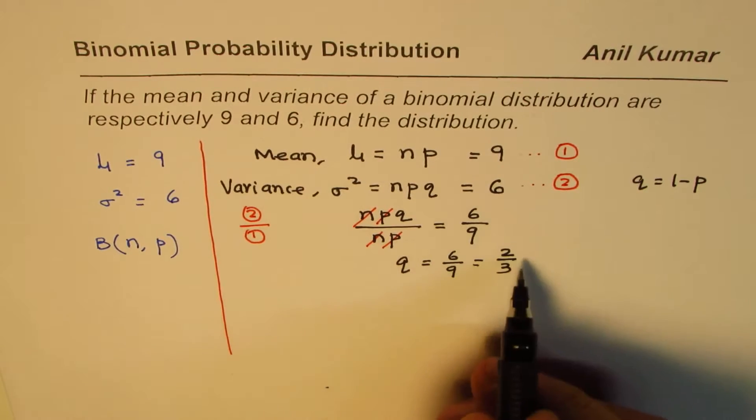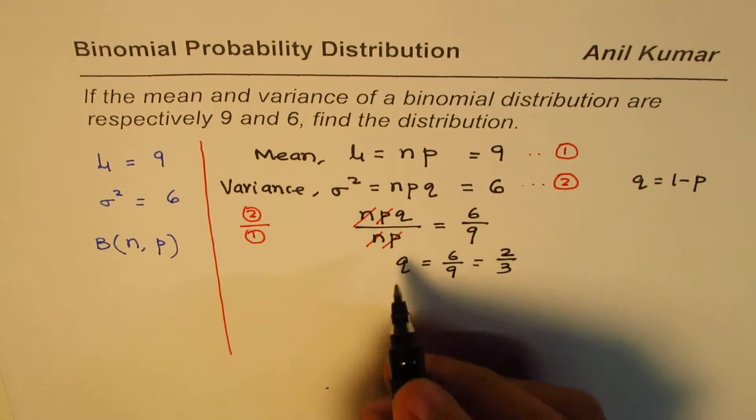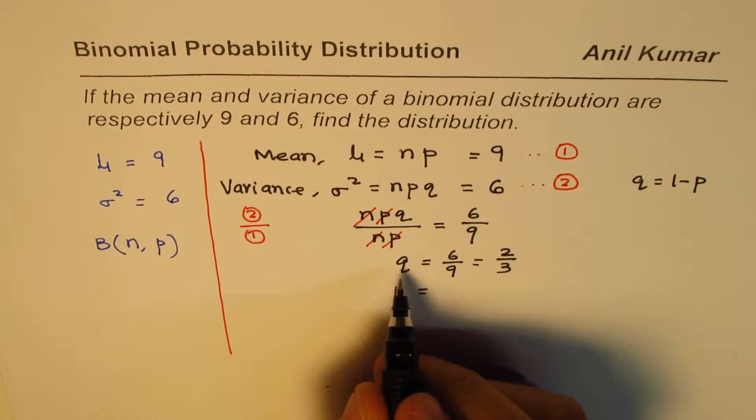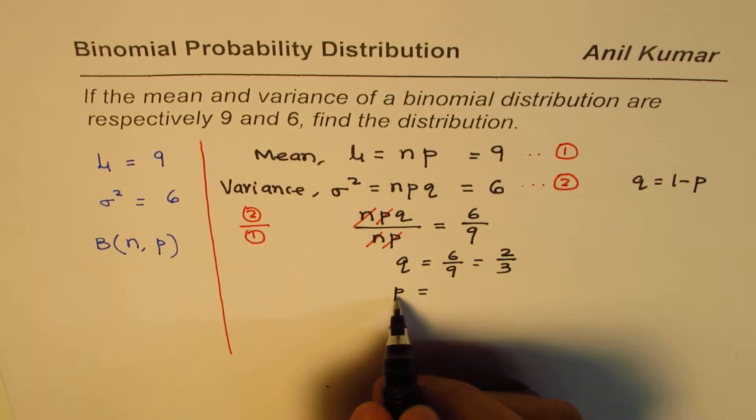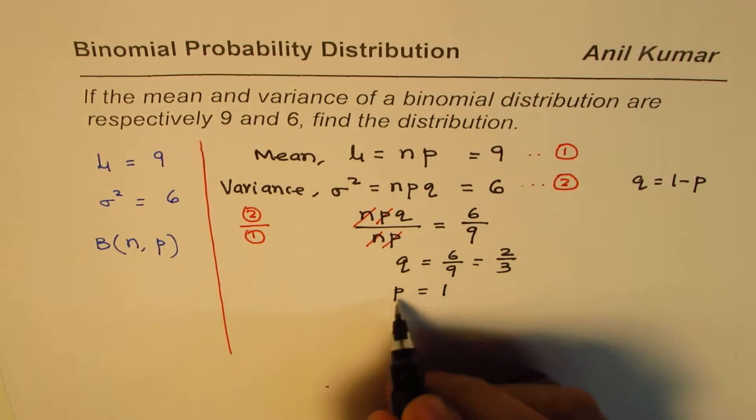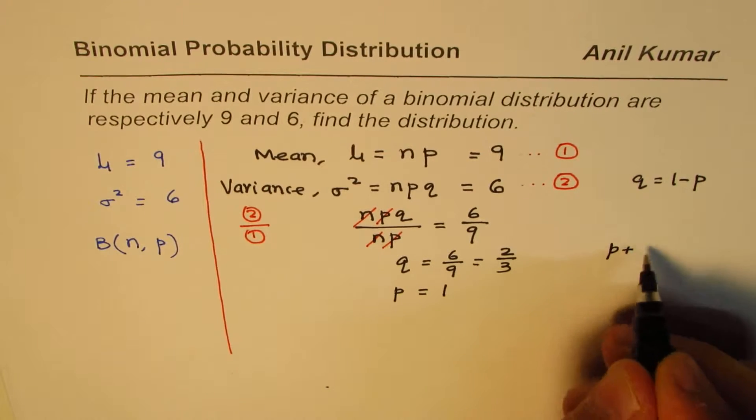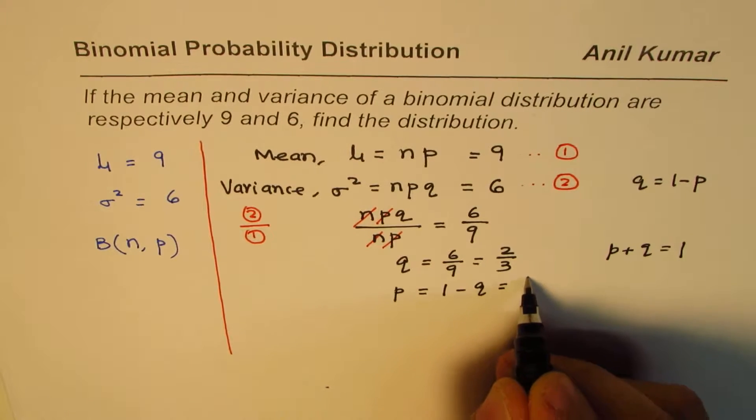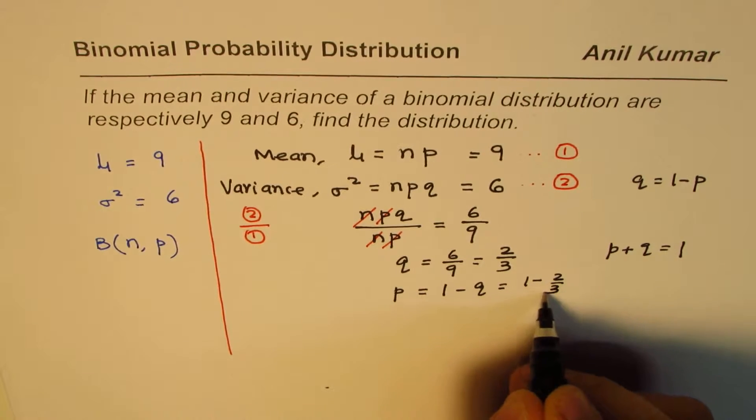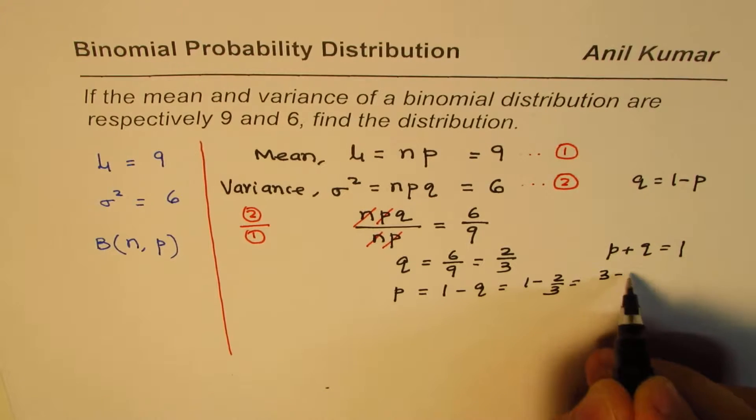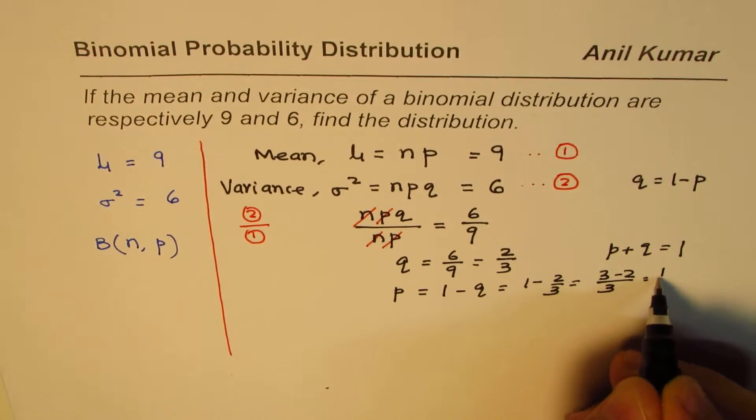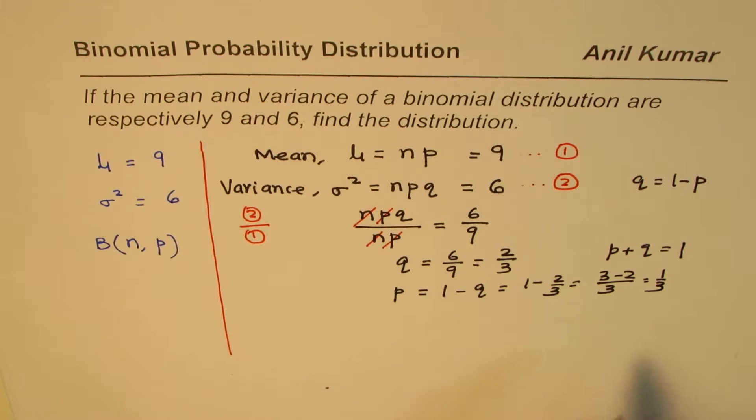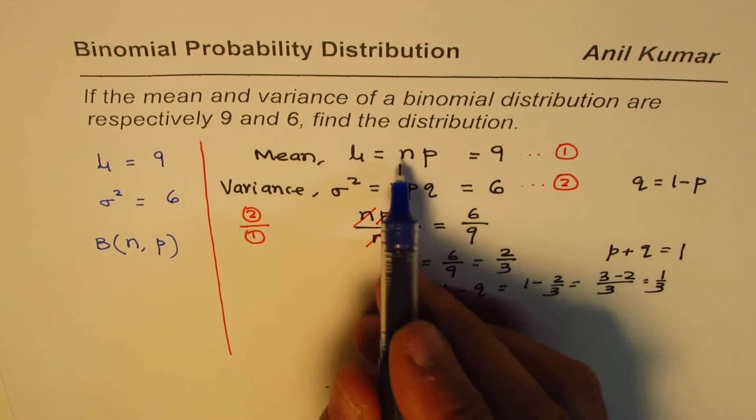Now if q is 2 over 3, what is p? This is probability of failure, this is probability of success. Their combination, we know p plus q should always equal 1, so p is 1 minus 2 over 3, which is 3 minus 2 over 3, which is 1 over 3. So probability of success here is 1 over 3.